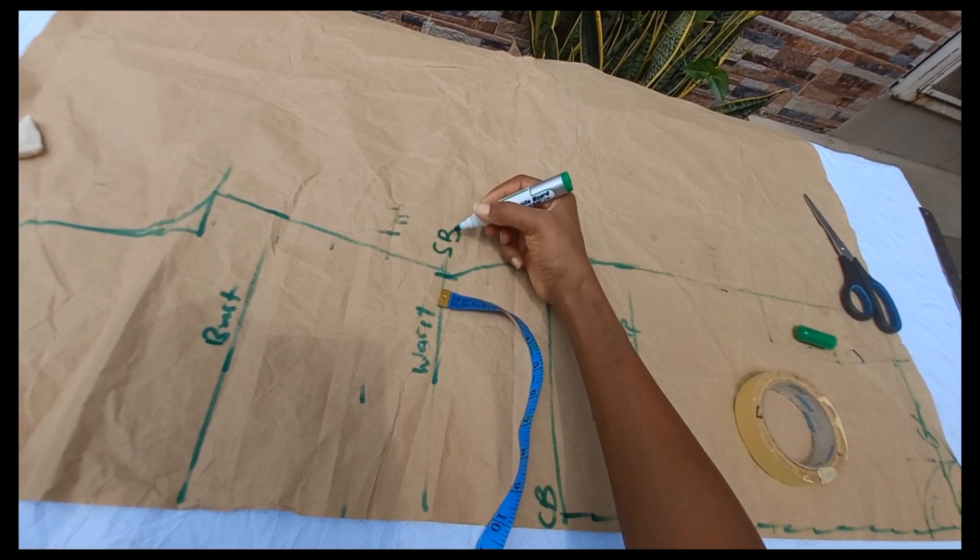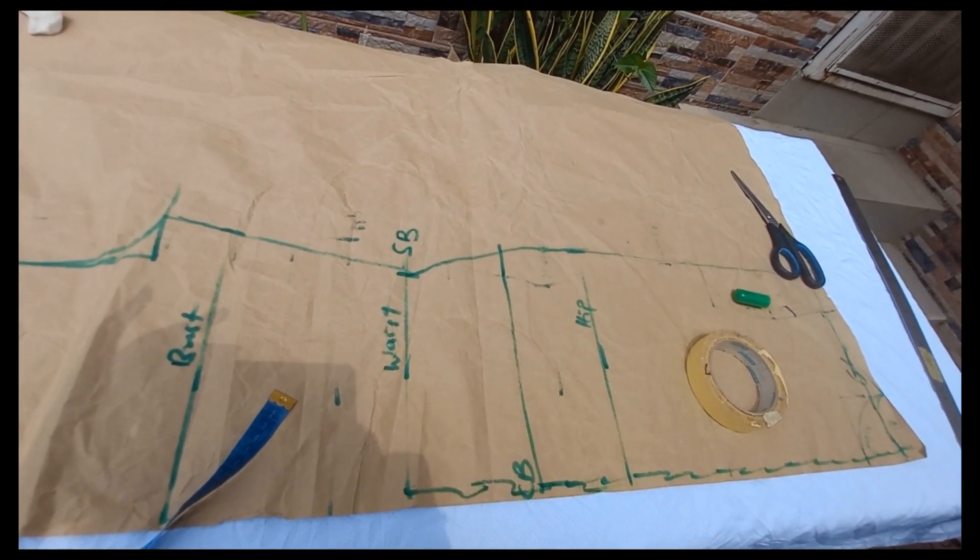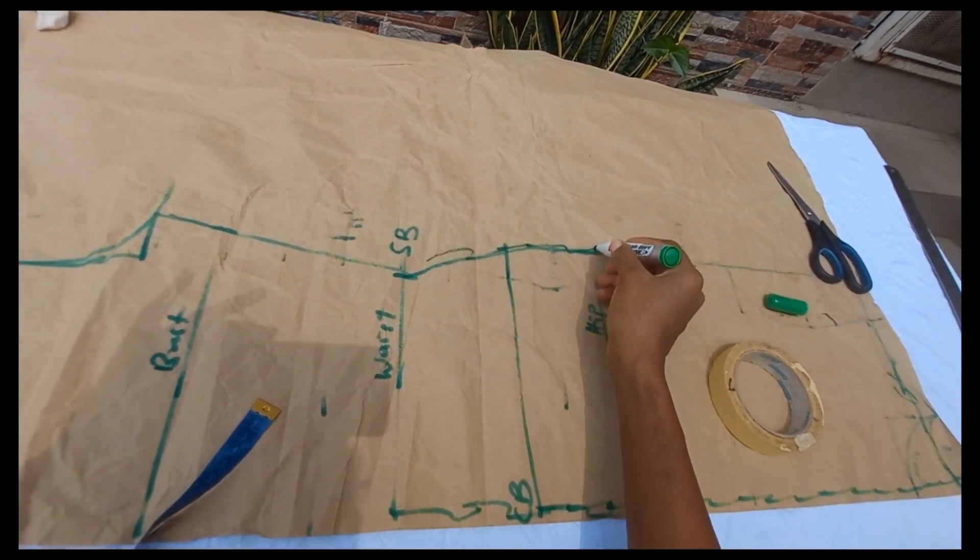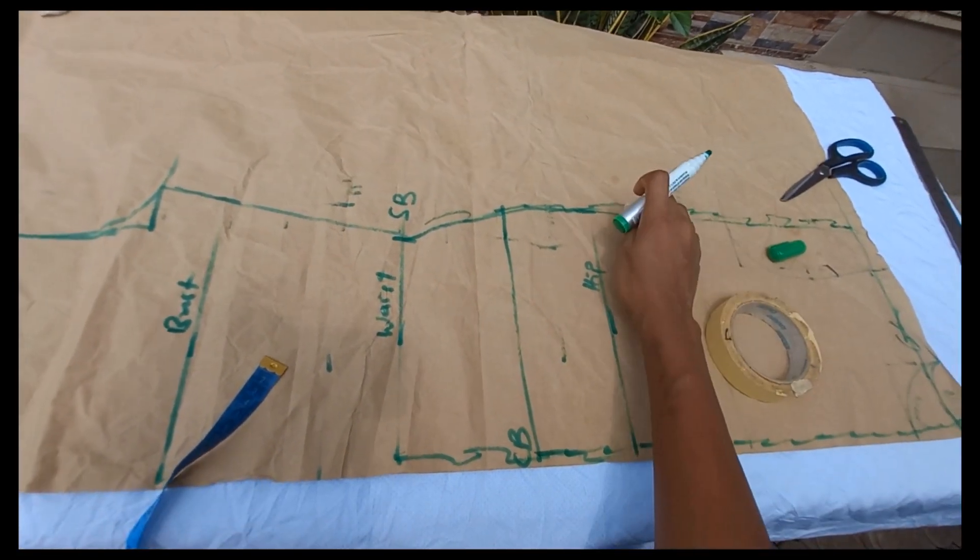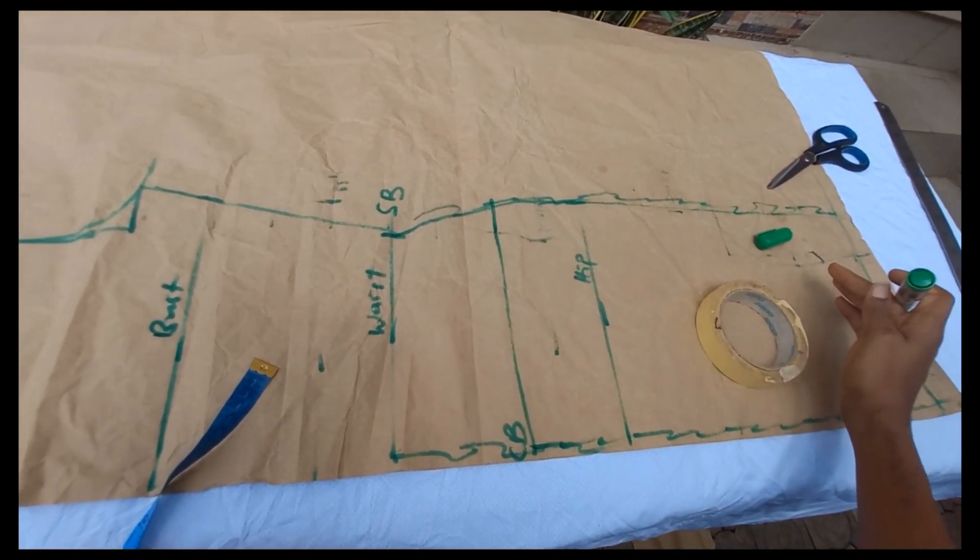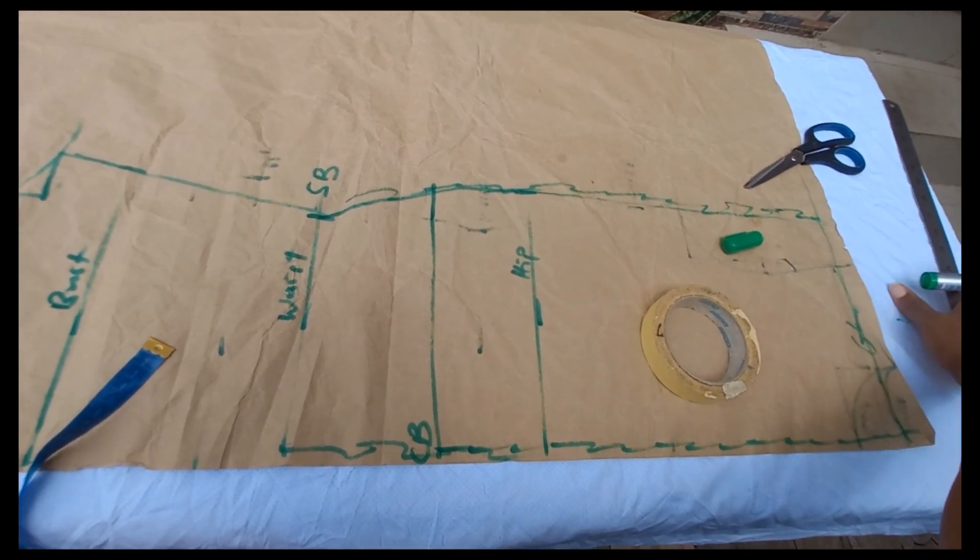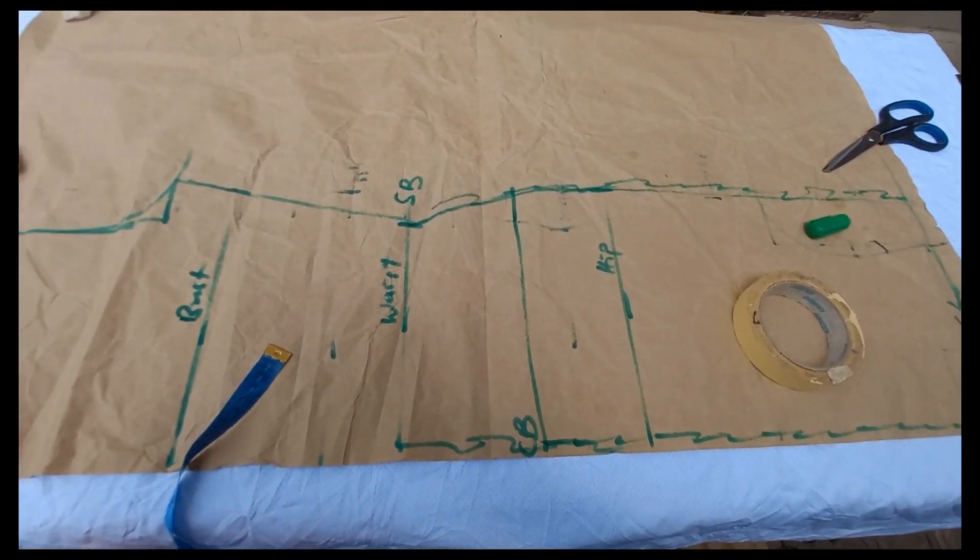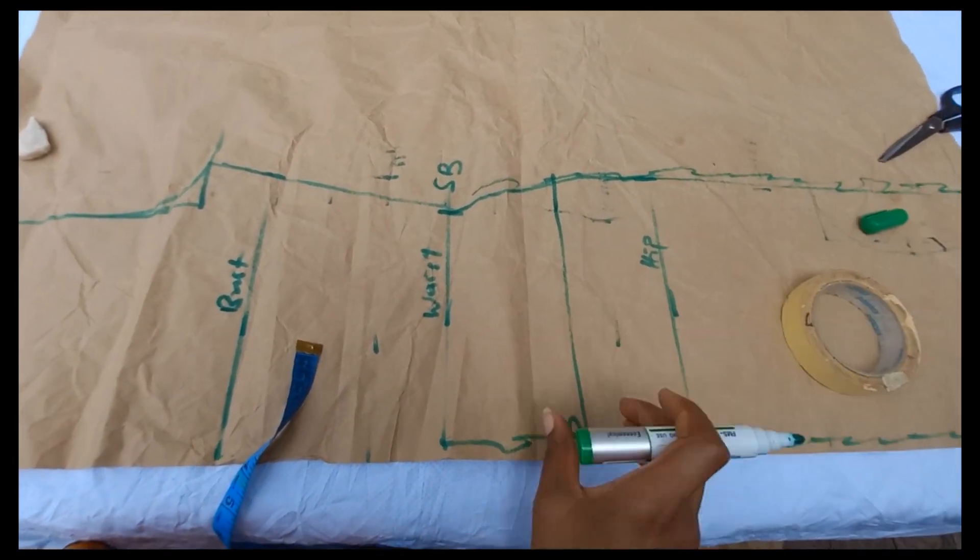In this back block, you can choose to create a different style by creating gathers in the center back as well. You can decide to make your gathers start from the waistline or from in between your waist and hip line. It is your choice, your client's choice, or whatever design you are creating in mind.